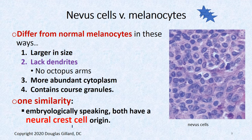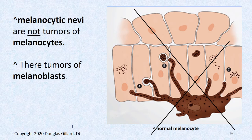Melanoblasts differ from melanocytes in four ways: melanoblasts are bigger, they don't have dendrites or arms, their cytoplasm is more abundant, and they contain coarse granules. Embryologically, both are derived from neural crest cells — sometimes called the fourth germ layer. Moles are not mutated melanocytes; mutated melanocytes lead to melanoma. Moles come from the melanoblast precursors.